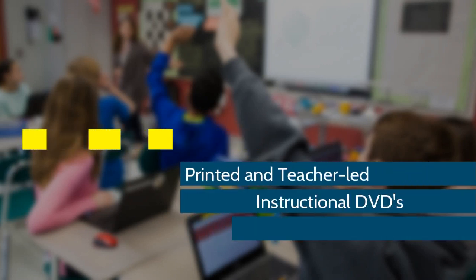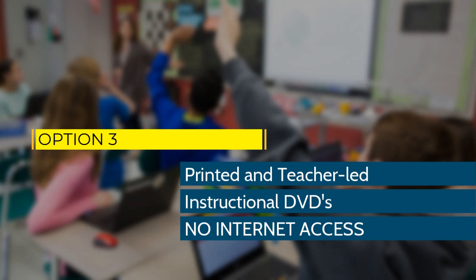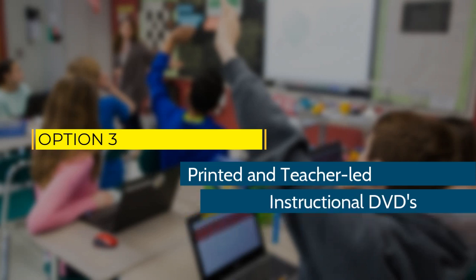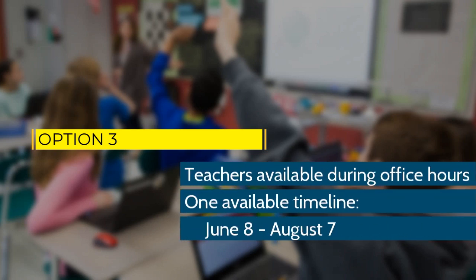Option 3 is printed and teacher-led. Students should choose this option only if absolutely necessary, such as not having internet access. Students will follow a recommended schedule and watch instructional DVD videos. Assigned teachers will be available by phone during scheduled office hours to assist students. The timeline for this option is June 8th to August 7th with an assigned summer school teacher.